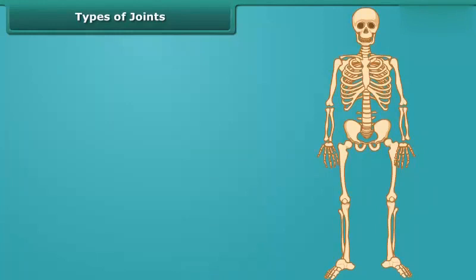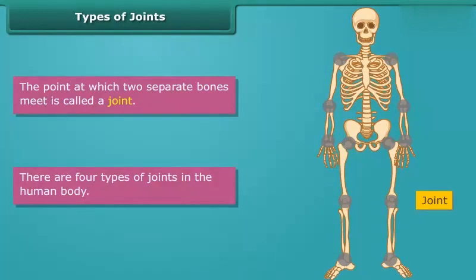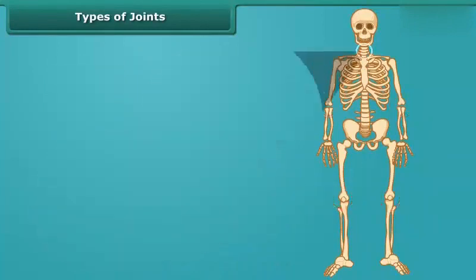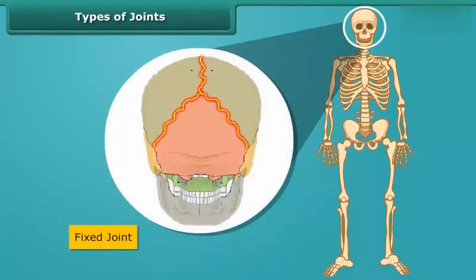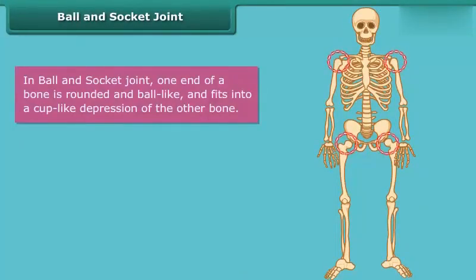We have just studied about the bones — now it's time to know the joints. The point at which two separate bones meet is called a joint. There are four types of joints in the human body: ball and socket joint, hinge joint, pivotal joint, and fixed joint. Let's have an activity before learning about each joint in detail. In a ball and socket joint, one end of a bone is rounded and ball-like and fits into a cup-like depression of the other bone, providing movement in any direction.